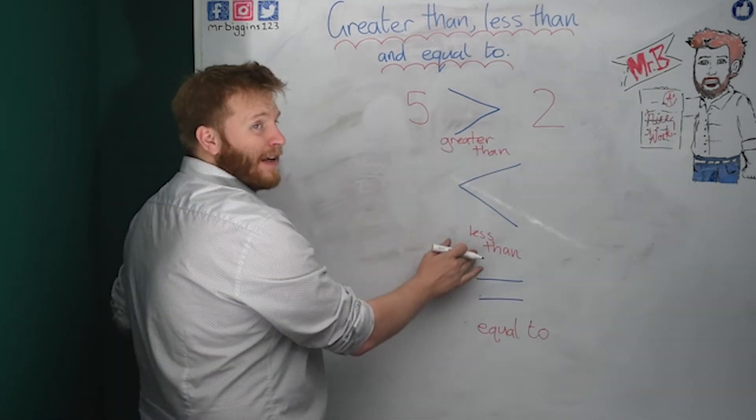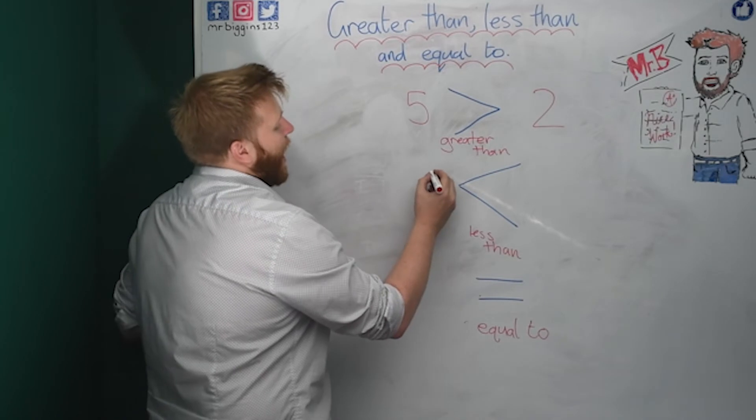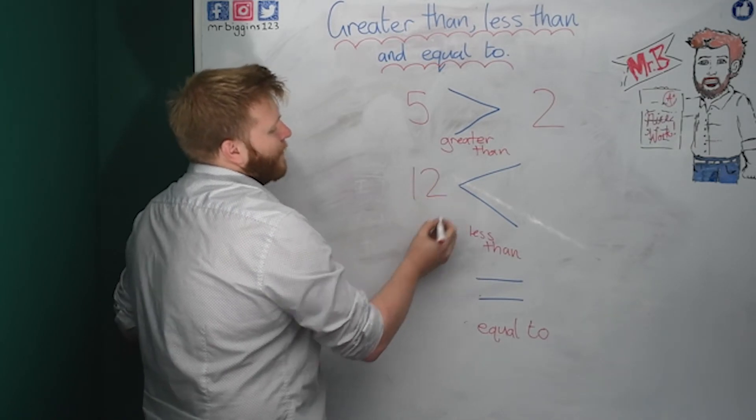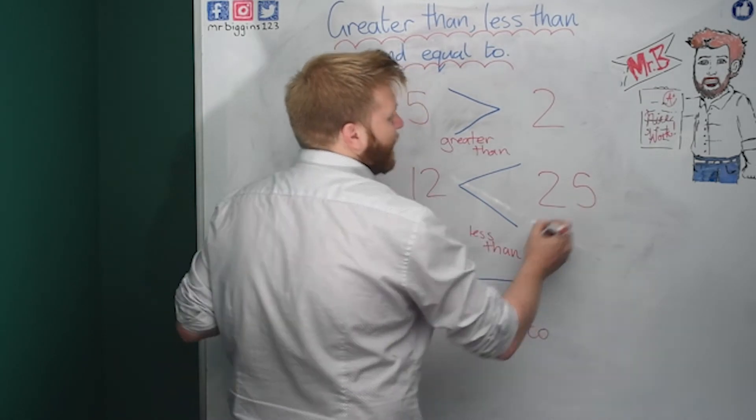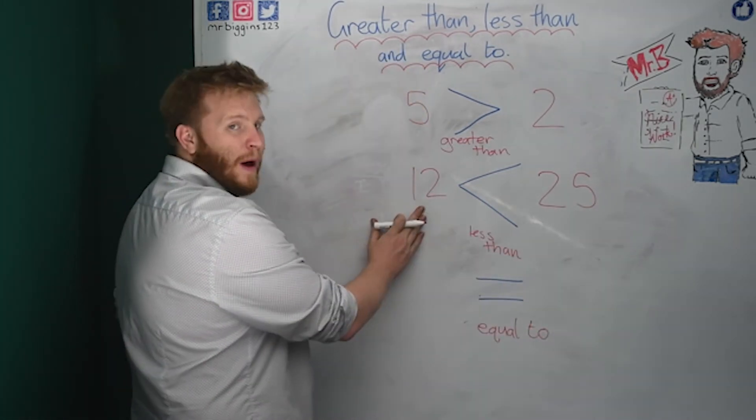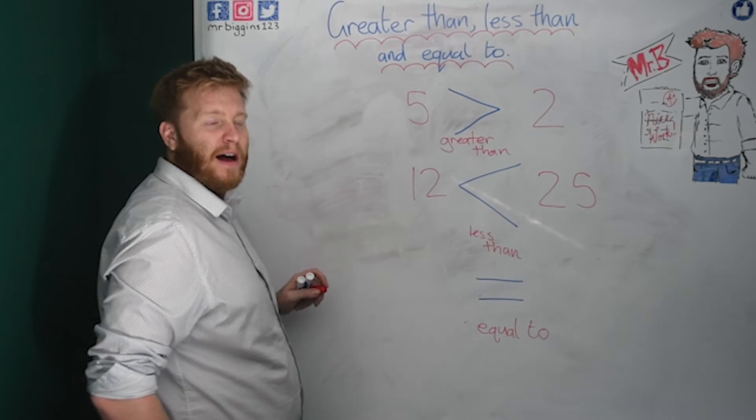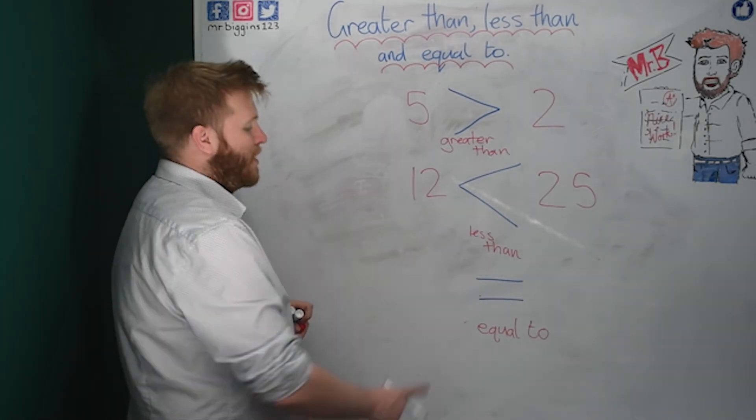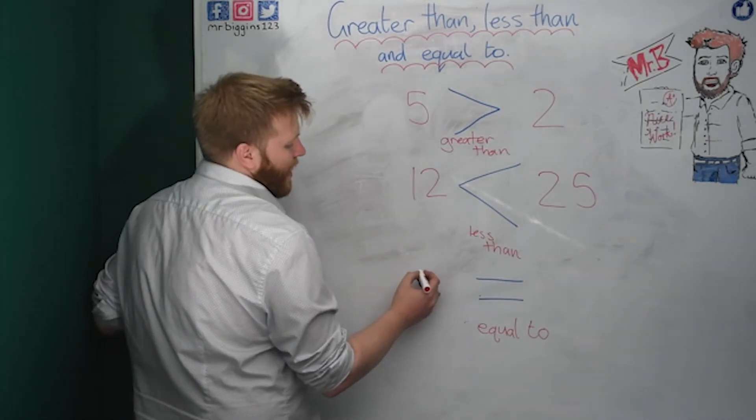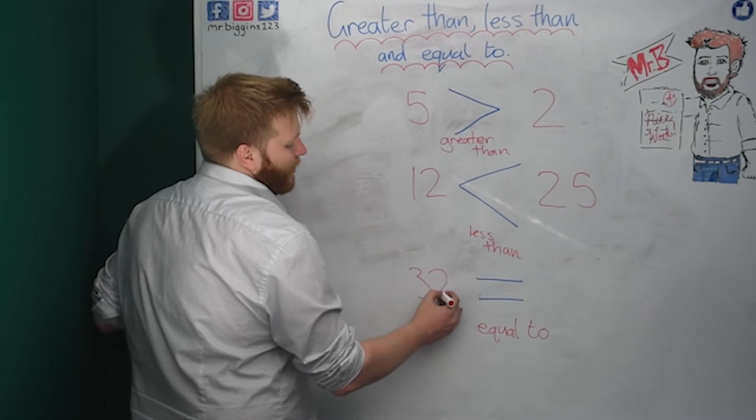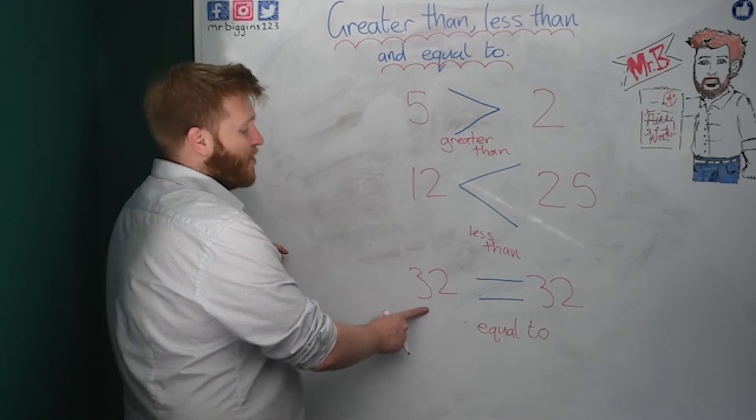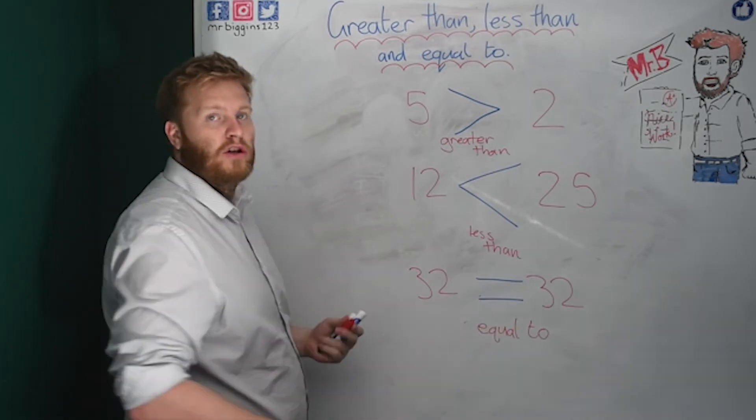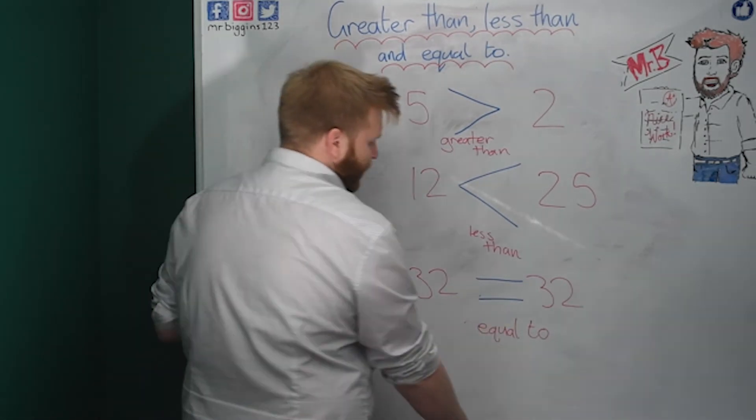On this one, I've got less than. So I could say 12 is less than 25, because 12 is a smaller number than 25. We get to which first one I count up. And then the same with equal to. I could have 32 and 32. I'm saying 32 is the same as 32, which it is because they are the same.